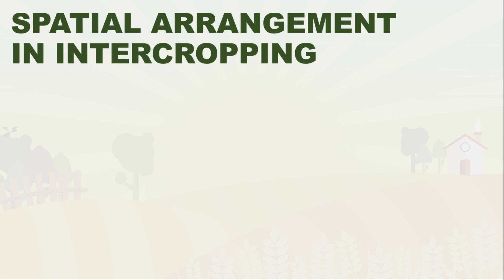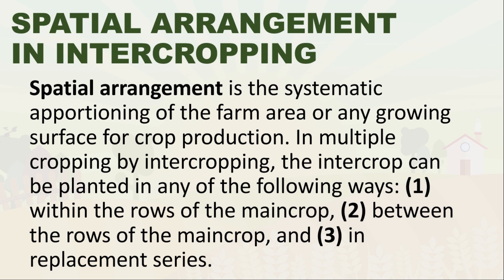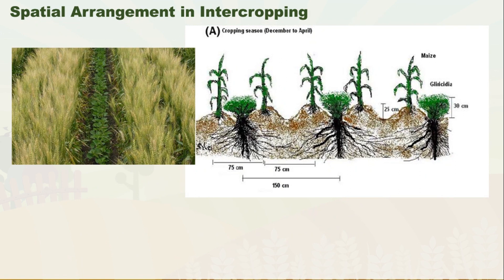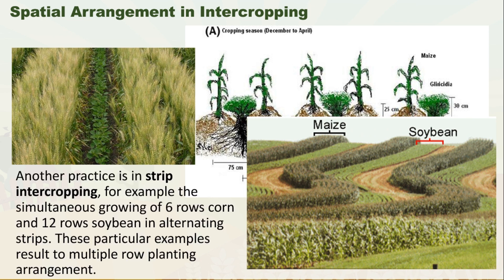Next is special arrangement in intercropping. Special arrangement is a systematic apportioning of the farm area for crop production. In multiple cropping by intercropping, the intercrop can be planted within the rows of the main crop, between the rows of the main crop, or in the replacement series. Another practice is strip intercropping — for example, the simultaneous growing of six rows of corn and twelve rows of soybean in alternating strips, resulting in a multiple row planting arrangement.